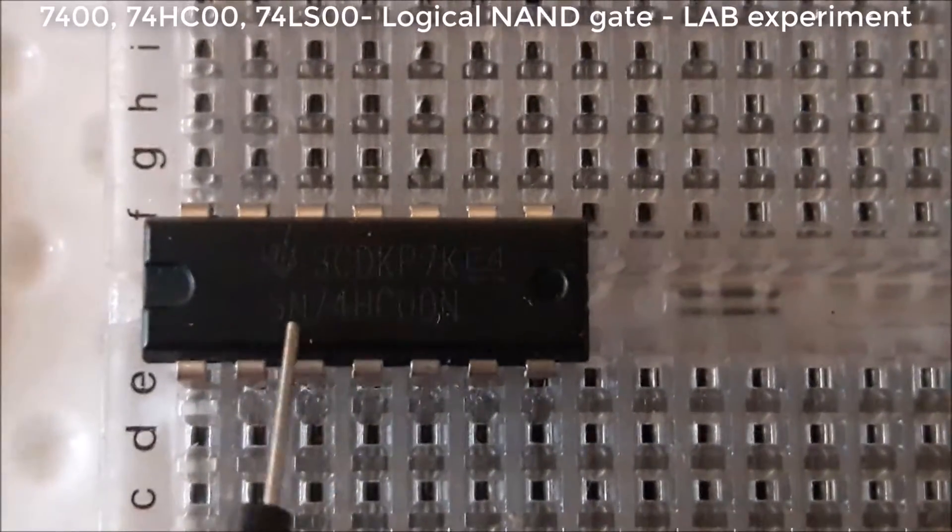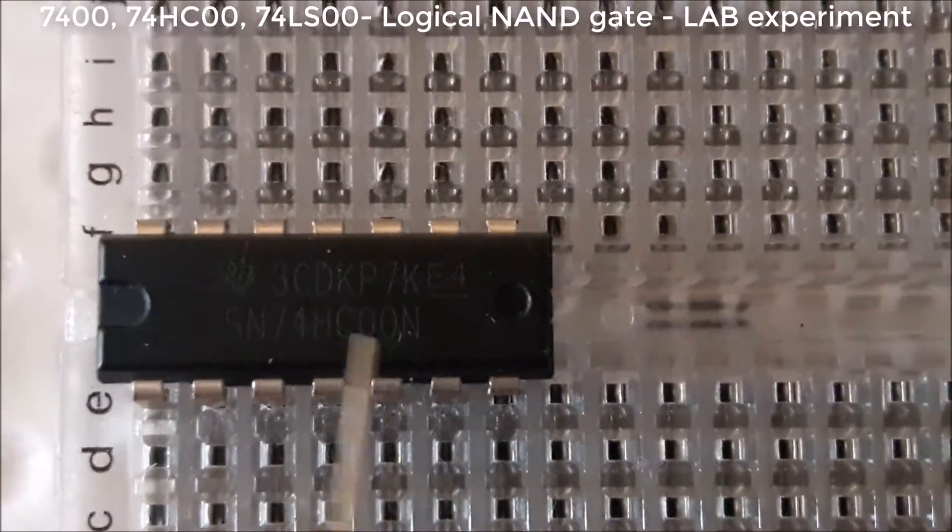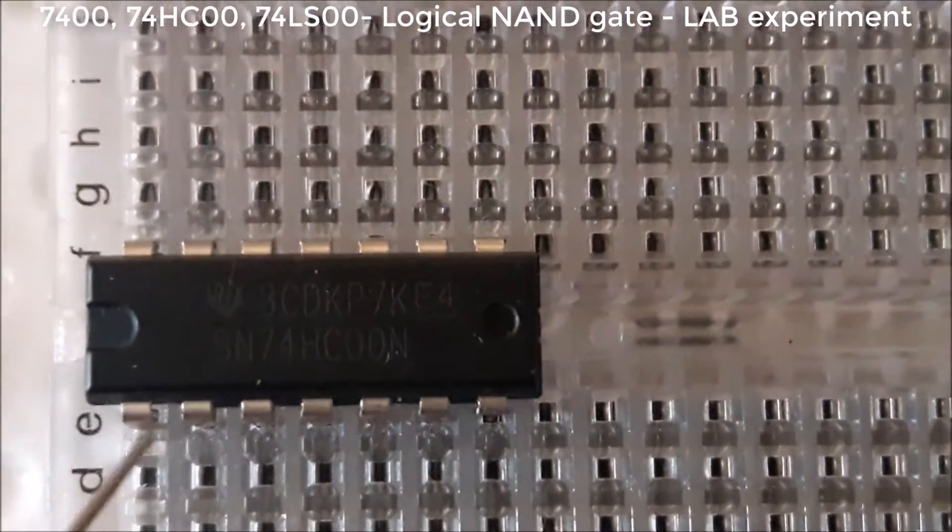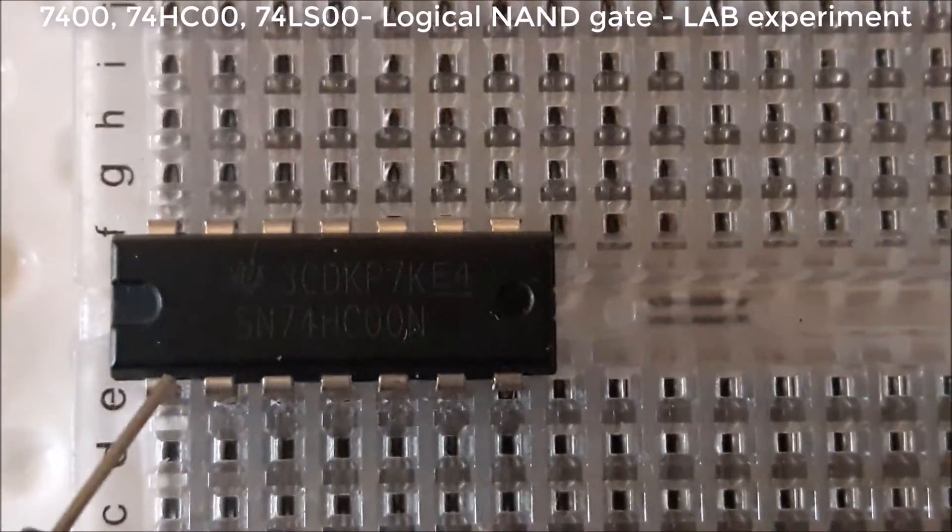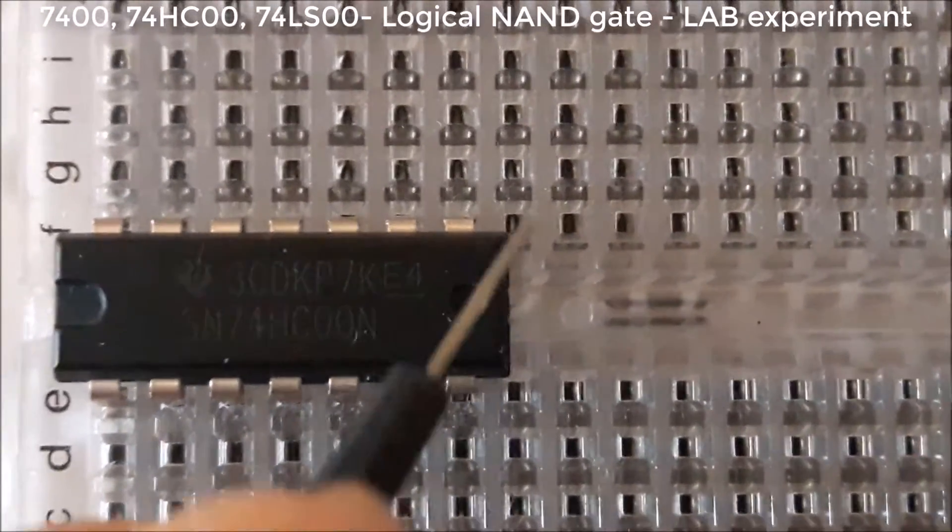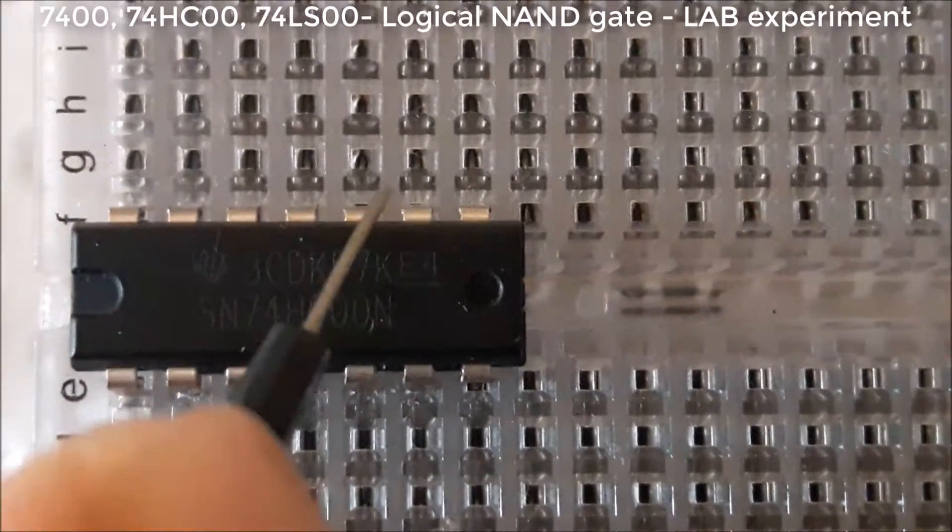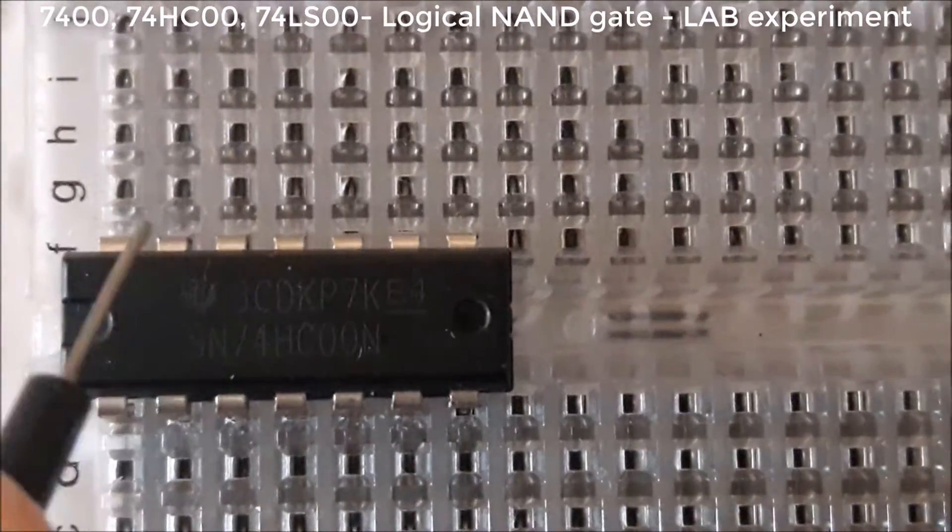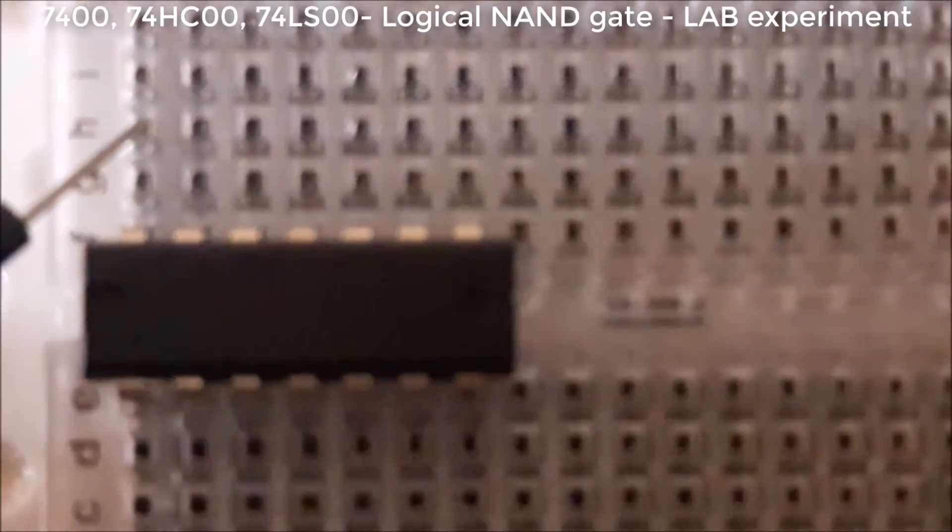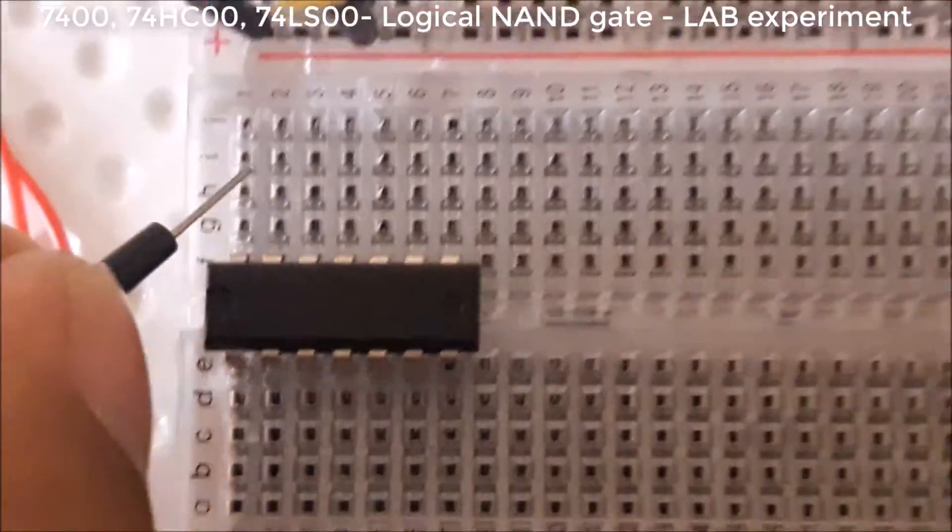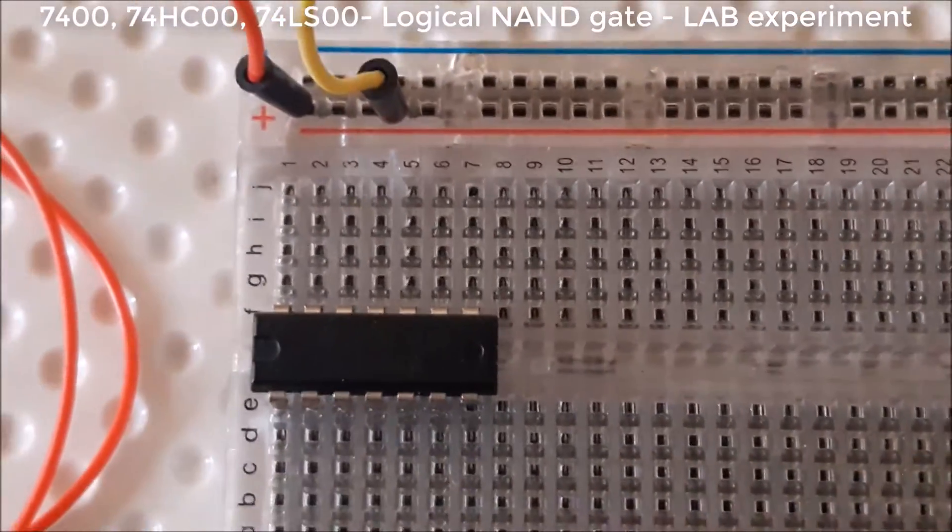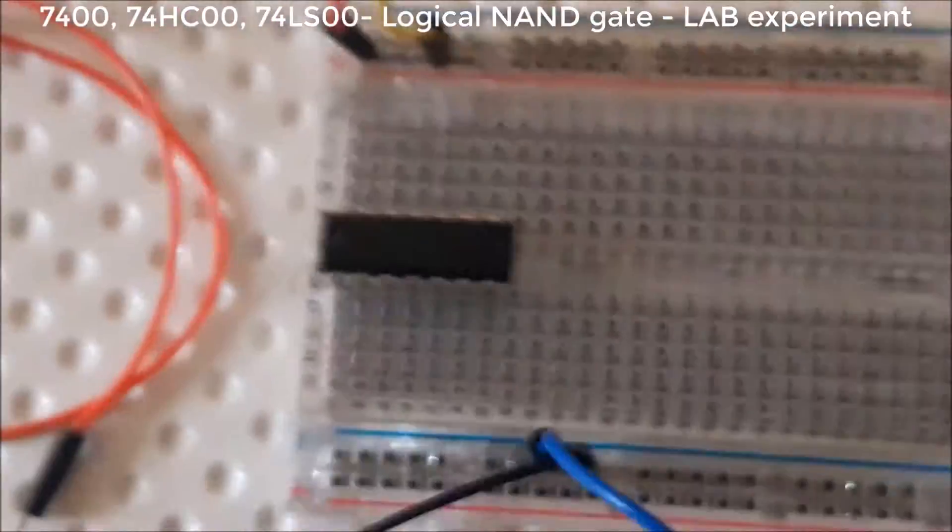Let's see here 74AC00N, this is a quad 2-input NAND gate. This is pin 1, and then 2, 3, 4, 5, 6 and 7, 8, 9, 10, 11, 12, 13, 14. This 14th pin is VCC and the 7th pin is for ground. Let's make the experiment.